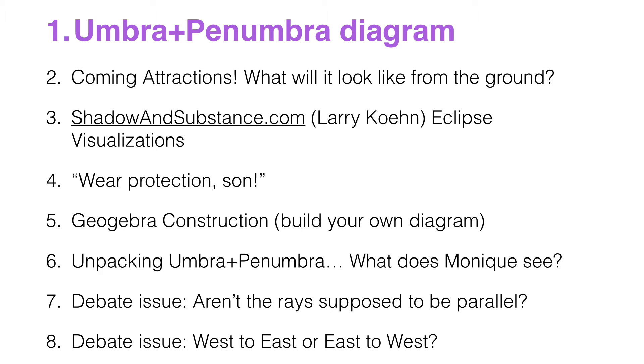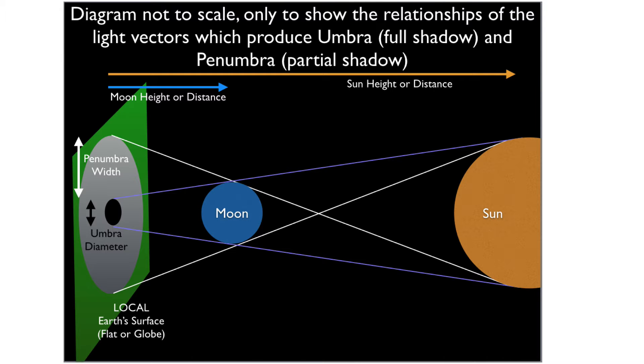So let's start off with our umbra-penumbra diagram. You've seen this a bunch of times. Basically, you've got the light source, the sun, something that's blocking the light, the moon, and then you have four tangent rays that we're going to talk about a little bit later on, creating the umbra and the penumbra.